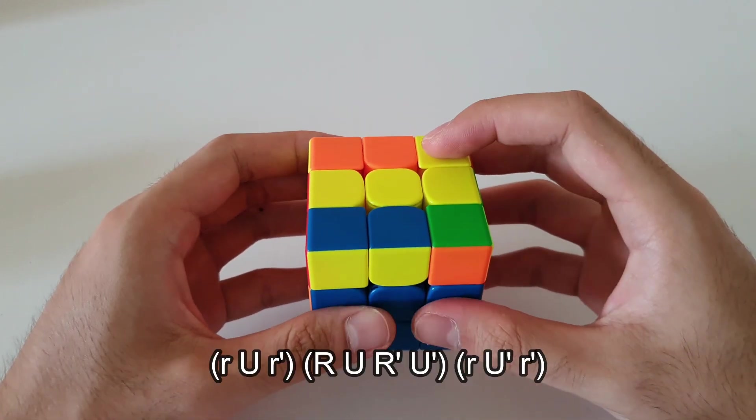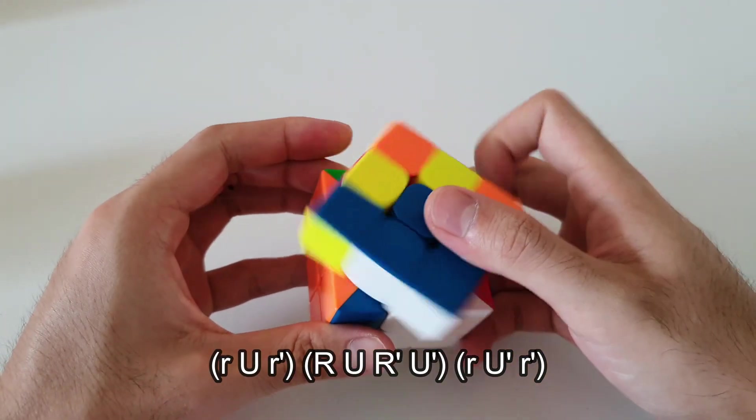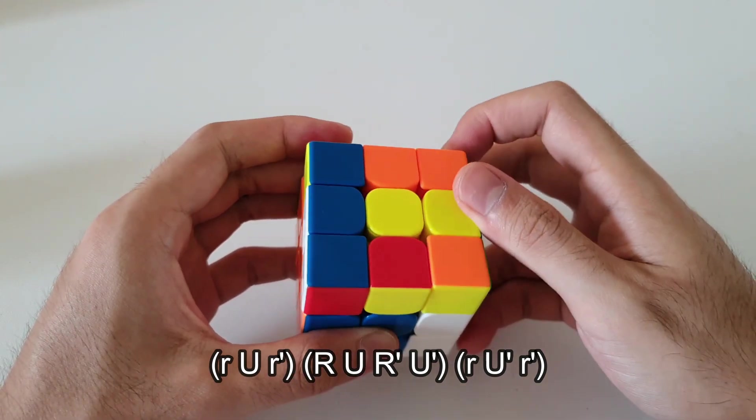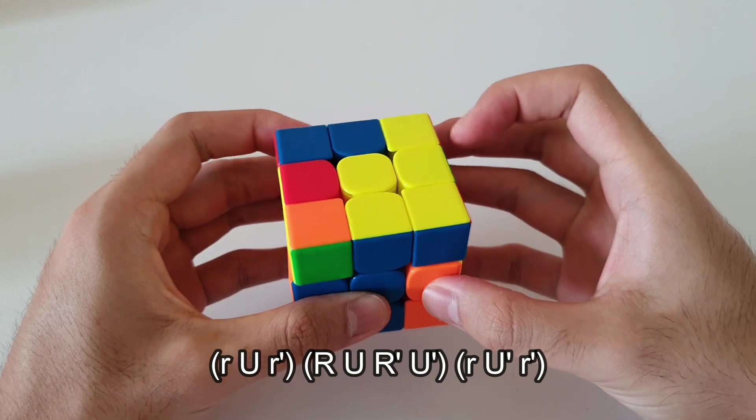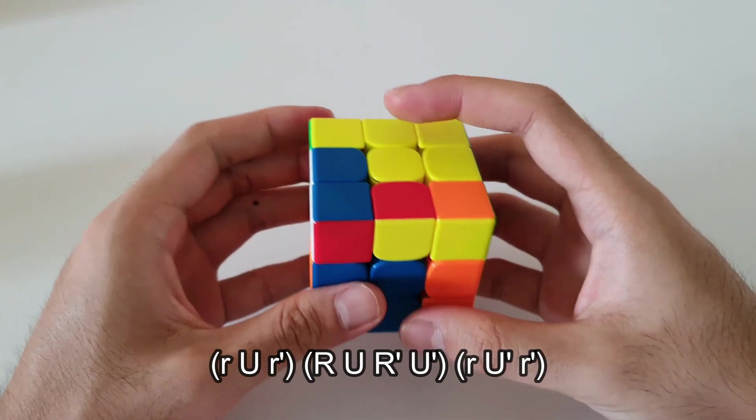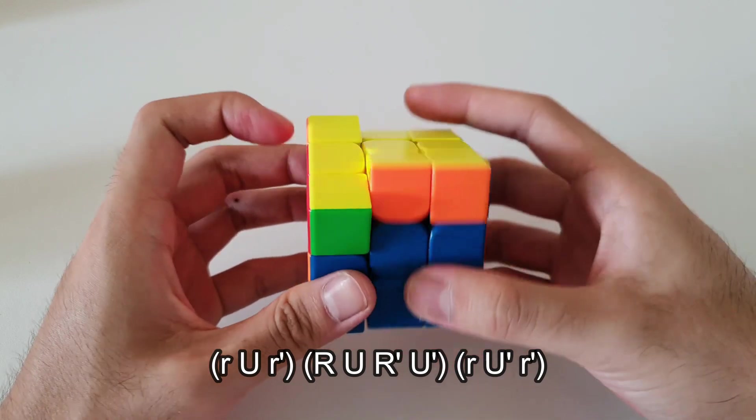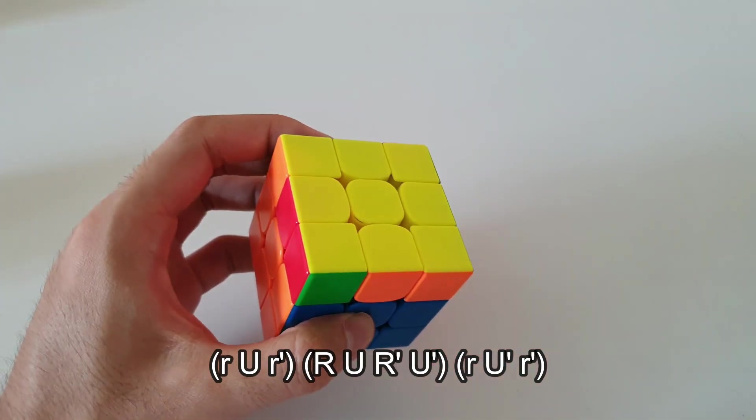The algorithm starts with a wide R U wide R', fairly straightforward. Following that R U R' U' and finally you end off with wide R U' wide R' and that solves that OLL case.